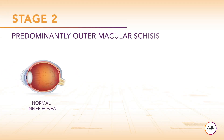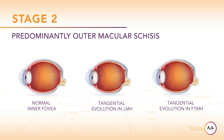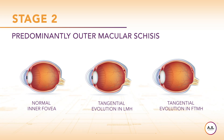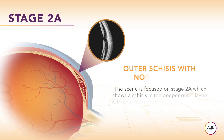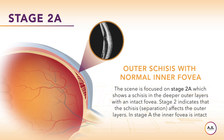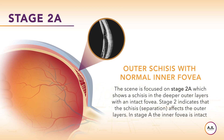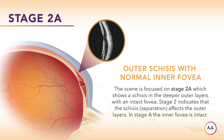The scene represents stage 2, outer schisis, and shows the tangential evolution from stage A (intact fovea) to B (lamellar macular hole) to C (full thickness macular hole). Stage 2a shows schisis in the deeper outer layers with an intact fovea. Stage 2 indicates that the schisis affects the outer layers. In stage A, the inner fovea is intact.